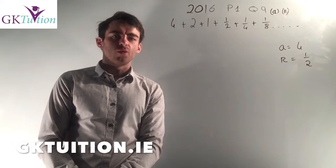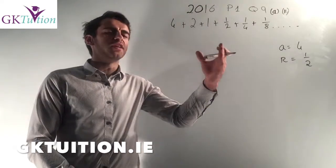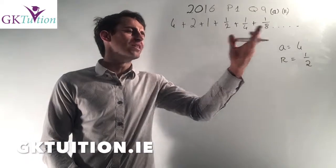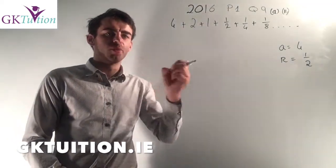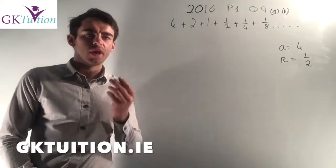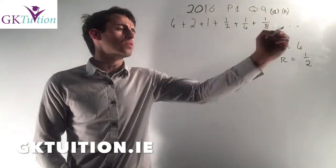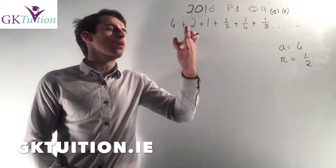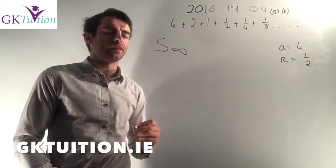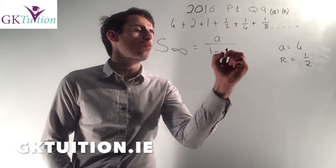In part 2 of this question we're asked to find the total distance the point can travel if it continues on in this pattern indefinitely. So if this pattern was to continue forever, how far is the point going to travel? I have a geometric sequence, I know my A and I know my R, so you should recognize that what they're referring to here is the sum to infinity. The formula for that is given in our log tables: the sum to infinity is equal to A over 1 minus R.